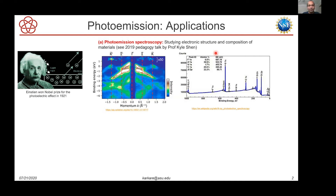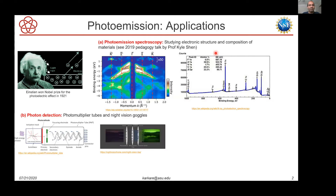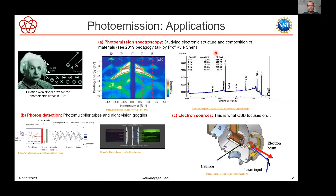In my view this has been the most dominant application of photo emission thus far. Another application is photon detection, which includes photo multiplier tubes and night vision goggles, where you detect infrared or other wavelength photons incident on a high-efficiency photo emitter and eventually detect the emitted electron. The final application is what we as a center focus on: photocathodes or electron sources, where you have a photo emissive surface in a strong electric field.